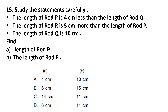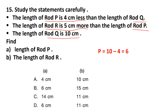Rod Q is 10 cm. Rod P is 4 cm less than rod Q, so the length of rod P is 10 minus 4, which is 6 cm. Rod R is 5 cm more than rod P, so the length of rod R is 6 plus 5, which is 11 cm. So P is 6 cm and R is 11 cm. Answer is option D.